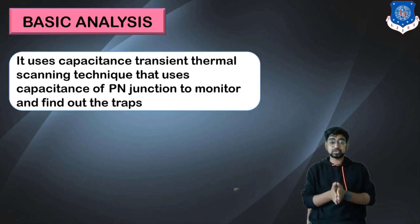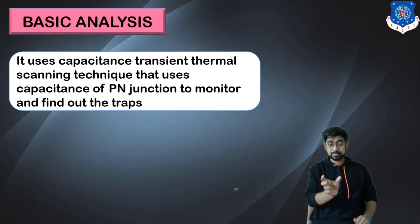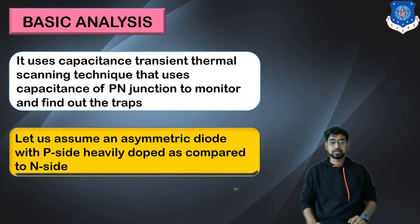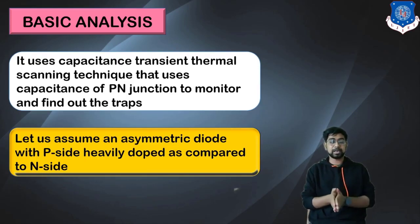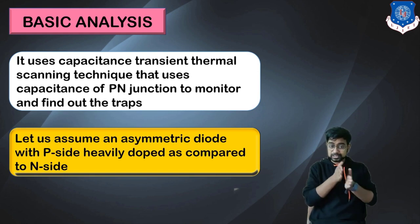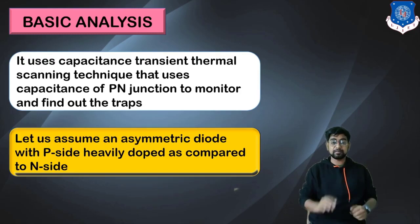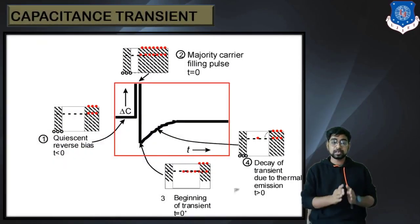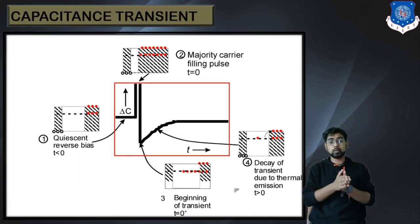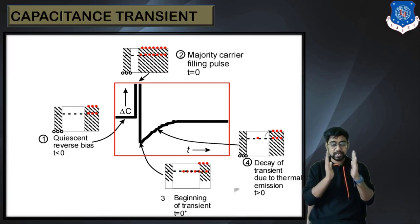Now basic analysis. It uses the capacitance transient thermal scanning technique that uses the capacitance of the PN junction to monitor and find out the traps. Something related to junction and capacitance would always be there. Let us assume an asymmetric diode with P-side heavily doped as compared to N-side. If it is heavily doped, the depletion region on the other side would be comparatively more in the N-type. Now the capacitance transient will be working. The first step is where the junction is reverse biased. When it is reverse biased, we have a depletion region which is very high. On one side there are holes and on the other side we have got electrons.